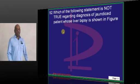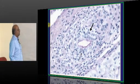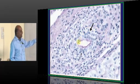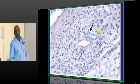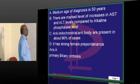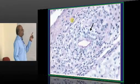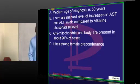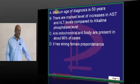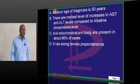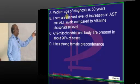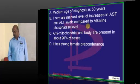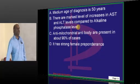Then a jaundice patient, liver biopsy has been presented to you. So this is very classical of primary biliary cirrhosis. There is an inflammatory reaction around the bile duct. What is the typical age group that you make a diagnosis? Typically in 40s, middle age female presenting with pruritus and jaundice is the classical description of primary biliary cirrhosis. There will be elevated AST, ALT compared to alkaline phosphatase and antimitochondrial antibody is there and it shows a female preponderance.